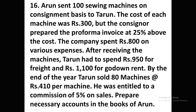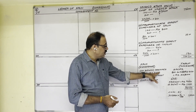Let us see the question. Arun sent 100 sewing machines on consignment basis to Tarun. The cost of each machine was 300 rupees, but the consignor prepared the pro forma invoice at 25 percent above cost. The consignor spent 800 rupees on various expenses. After receiving the machines, Tarun had to spend 950 rupees for freight and 1,100 rupees for godown rent. By year end, Tarun sold 80 machines at 410 rupees per machine. He was entitled to a commission of 5 percent on sales. Prepare necessary accounts in the books of Arun.